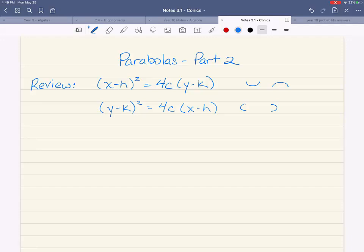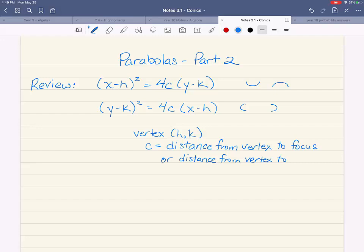So the information you can get from both of these formulas is that the vertex is h and k. And c happens to be the distance from the vertex to the focus. It is also the distance from the vertex to the directrix.